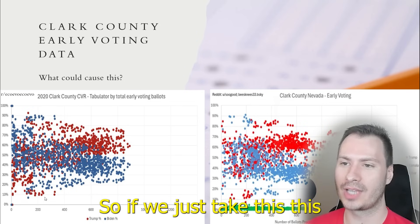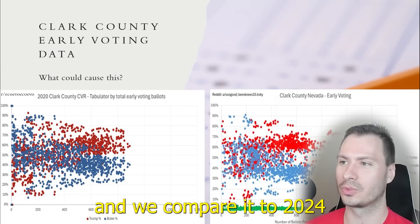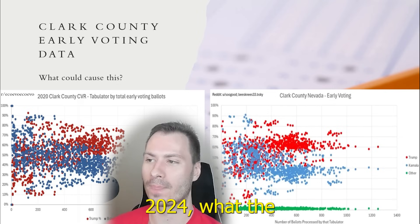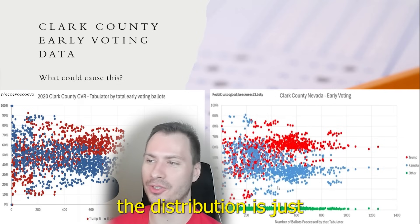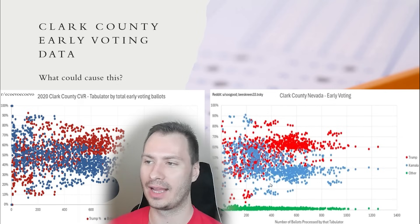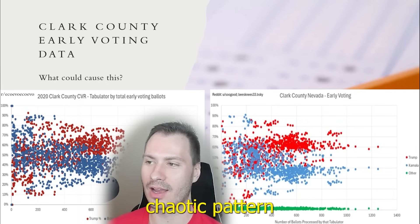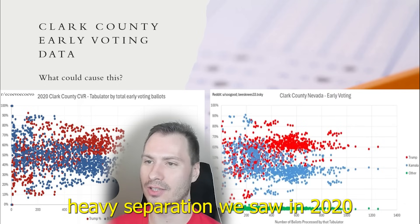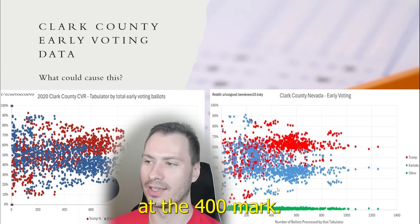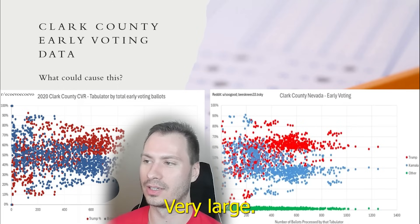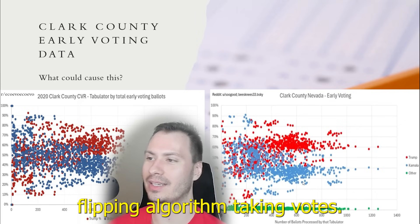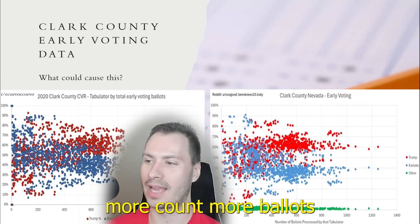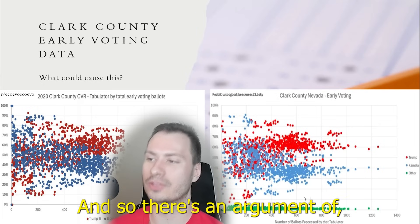This is in 2020. If we take just the more normal sub-600 group and compare it to 2024, the distribution is just absolutely abnormal. After about 400 votes, we start to see that heavy separation — and after around 600, it just becomes a solid, very large separation between both parties. This would suggest there was a vote-flipping algorithm: as you fed more ballots in, it shifts the outcomes. Realistically, this is the entire county, and so we should see an average distribution because any hotspots of red or blue would even themselves out.